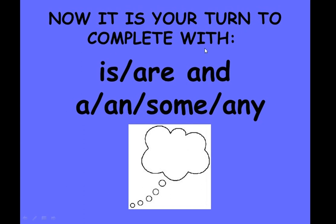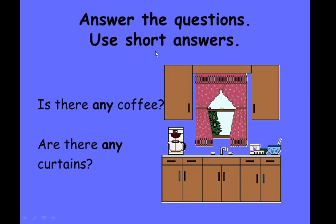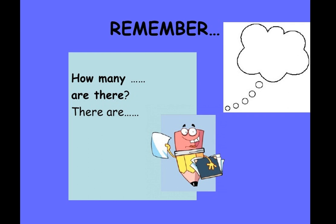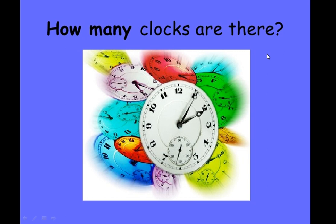Now it is your turn to complete the sentences using is/are and a/some/any. Answer the questions using short answers. Is there any coffee? Are there any curtains? Is there a fridge in the kitchen? Is there a cooker in the kitchen? Are there any pots? Is there any milk? Remember how many: how many chairs are there? How many TVs are there? How many clocks are there?